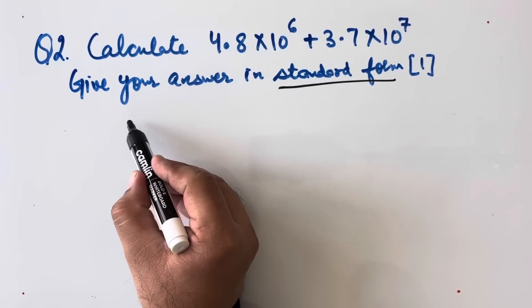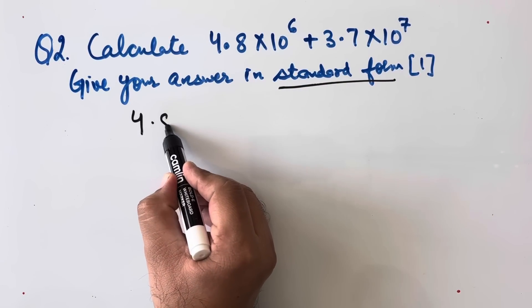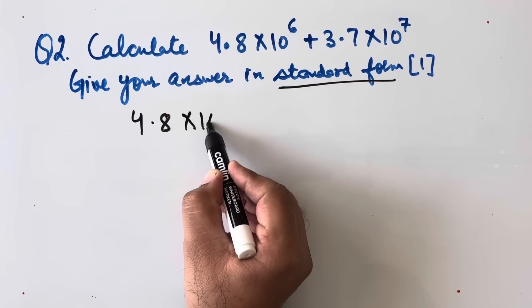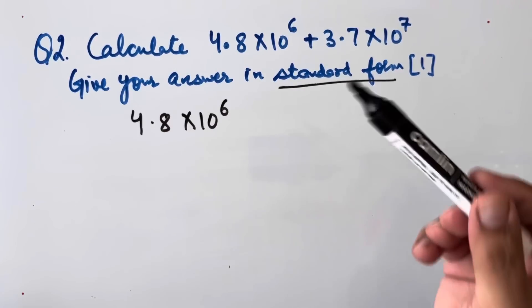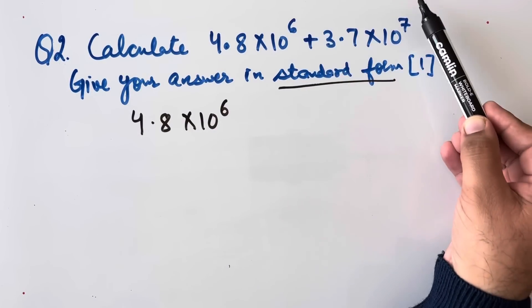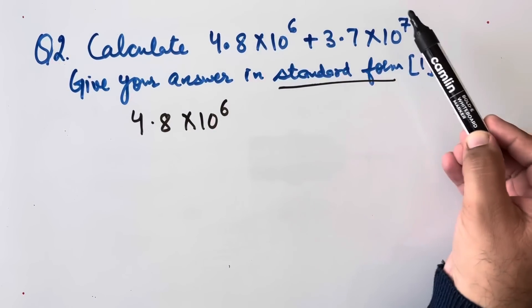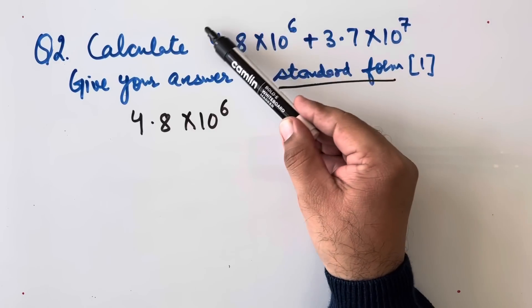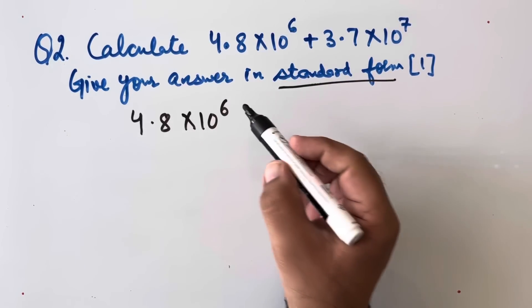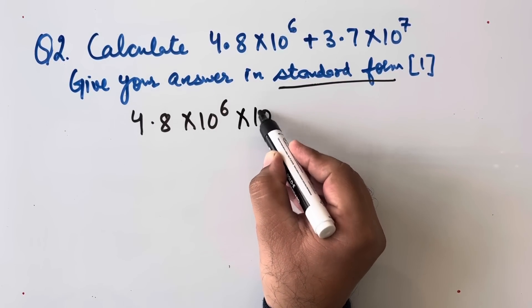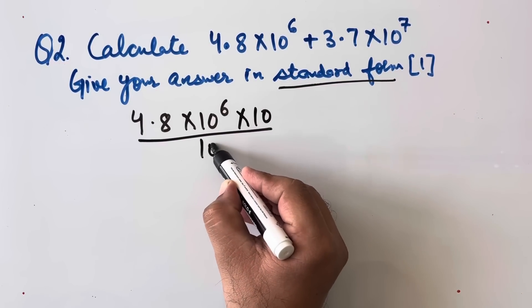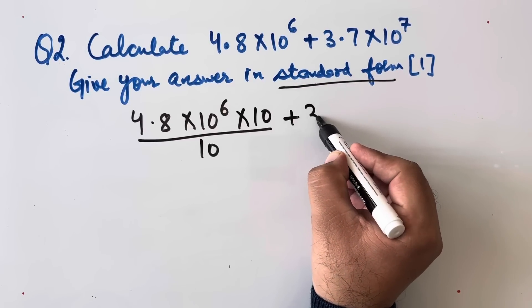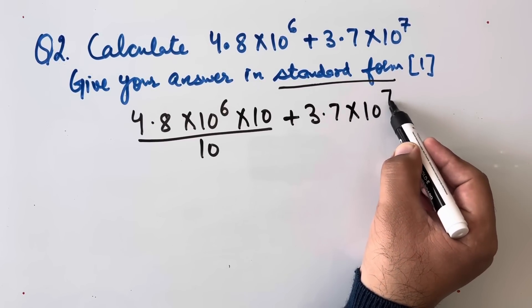Now we will be writing 4.8 × 10^6. In order to make this power 10^6 and 10^7 equal, we will be multiplying this term with 10 and dividing by 10. This will be written as it is 3.7 × 10^7.